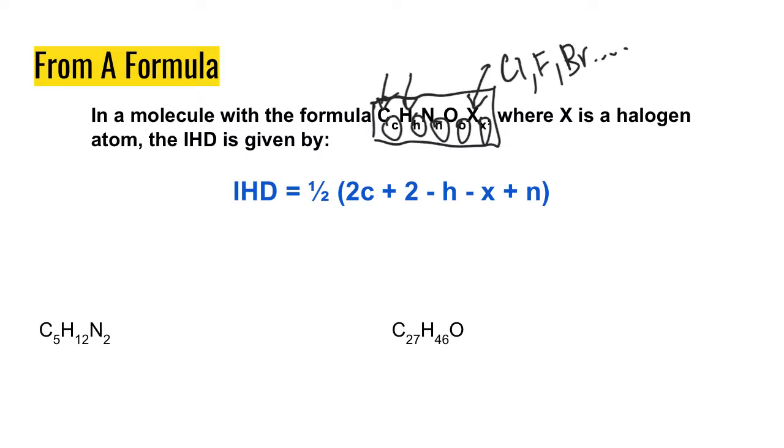So if we're given a formula in that format, then the IHD is equal to ½ times (2c + 2 - h - x + n). So it's 2 times the number of carbons plus 2 minus the number of hydrogens minus the number of halogens plus the number of nitrogens.